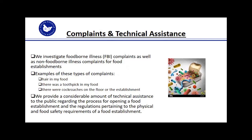Complaints and technical assistance: we investigate foodborne illness complaints as well as non-foodborne illness complaints. A foodborne illness complaint is pretty self-explanatory, but non-foodborne illness complaints include things like a hair on my food, somebody recently bit into a toothpick that was in their food, or cockroaches on the floor of the establishment. We provide a lot of technical assistance to the public on how to start a new restaurant — what are the applications, what's the process — and we give them information from the WAC about physical facility requirements and food safety regulations.